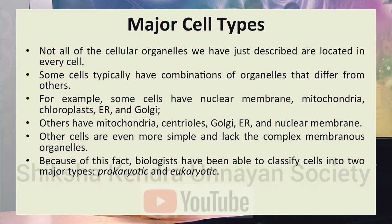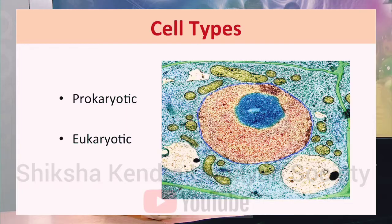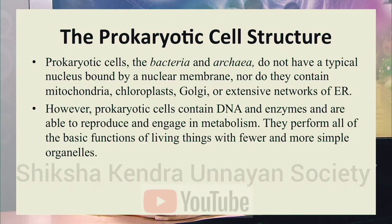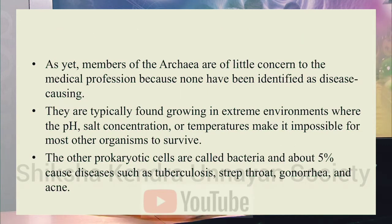On the basis of this, biologists have divided cells into two major types: prokaryotic and eukaryotic. The prokaryotic cell group basically includes bacteria and archae. These organisms do not have a typical nucleus bound by a nuclear membrane, and they do not contain mitochondria, chloroplast, Golgi bodies, or an extensive network of endoplasmic reticulum. Prokaryotic cells do contain DNA and enzymes, but the DNA is not bounded by an envelope.